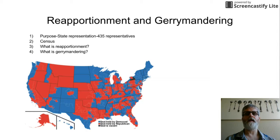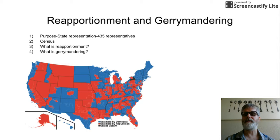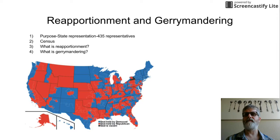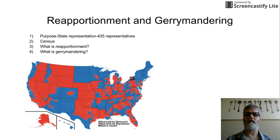The House of Representatives in 1929 was set to 435 members by law and it can't change. The House is chosen by population, and originally in the Constitution there would be one representative for 30,000 people. If we kept that 1-to-30,000 range, we'd have over 11,100 people in the House. So right now we stick it at 435, meaning one representative equals about 650,000 people on average.